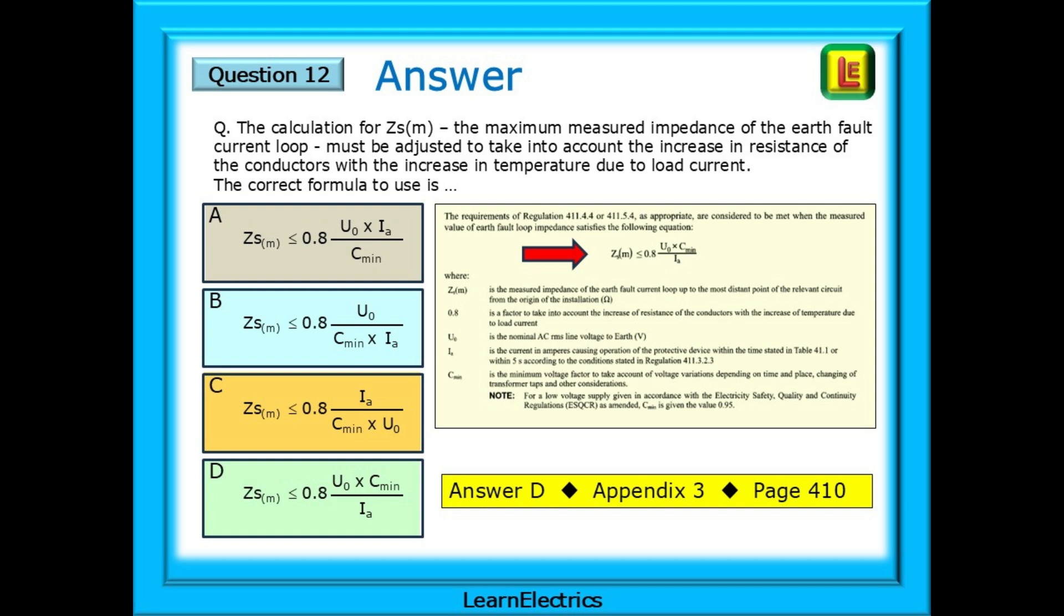Turning to appendix 3, beginning on page 409, we have a formula but 0.8 does not appear in it. Turn over the page to page 410 and we have a formula that does contain a 0.8. Match the formula in the book to the formula in the question and we have the answer choice D.